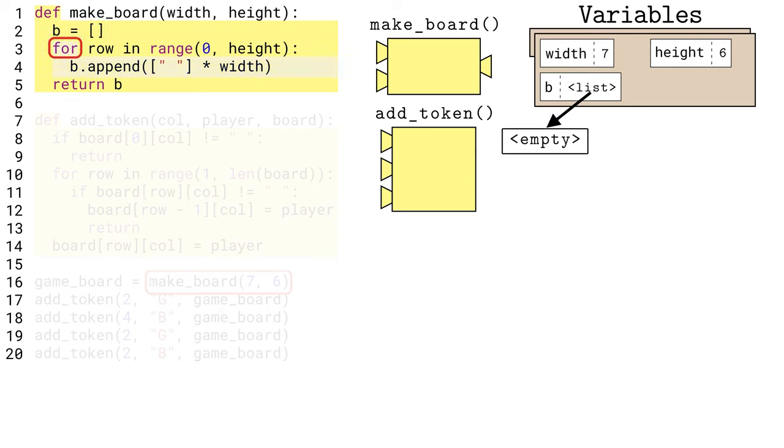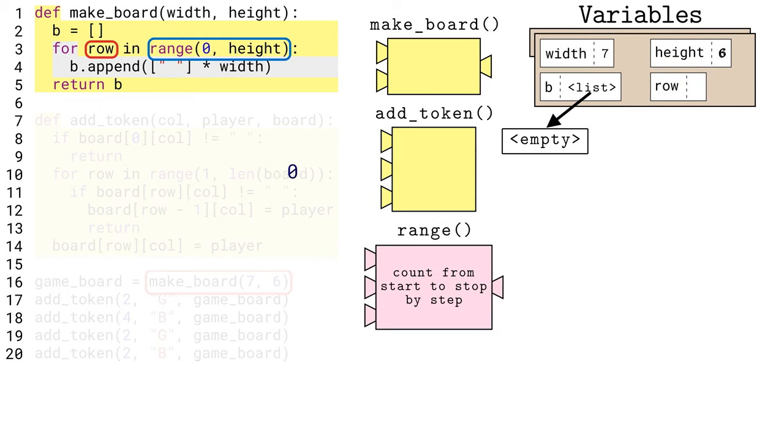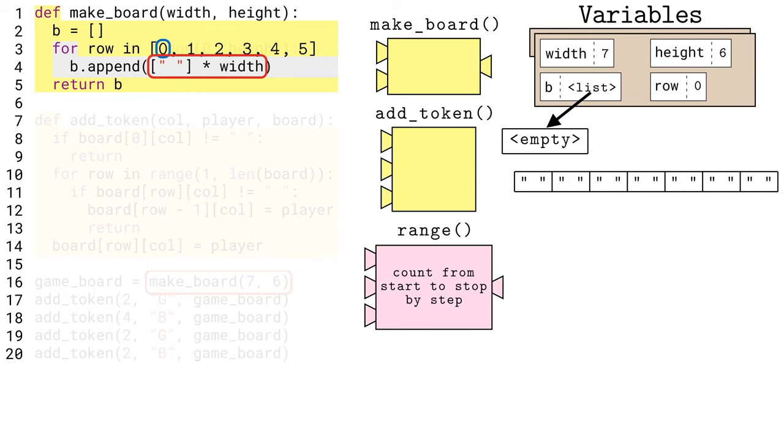The for range loop on line 3 will repeat line 4 a number of times equal to the height parameter variable. This is achieved by expanding the range into effectively a list of numbers from 0 through 5 inclusive, and then iterating the row variable through those numbers. Line 4 might look a little strange. The square brackets say to make a list with a single space character inside, but then why are we multiplying a list by an integer? Python interprets the multiplication by 7 as repeating the contents of the list 7 times. That is, we make a full row of strings that represent no player tokens being there yet. The append method adds this new list to the existing B list, creating a new row in the two-dimensional board. Because of the for loop, line 4 repeats until all rows are added to the board list.